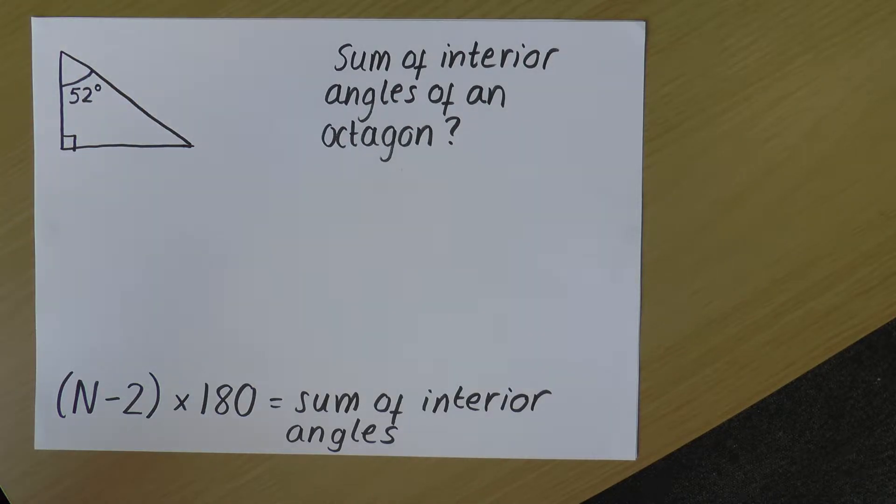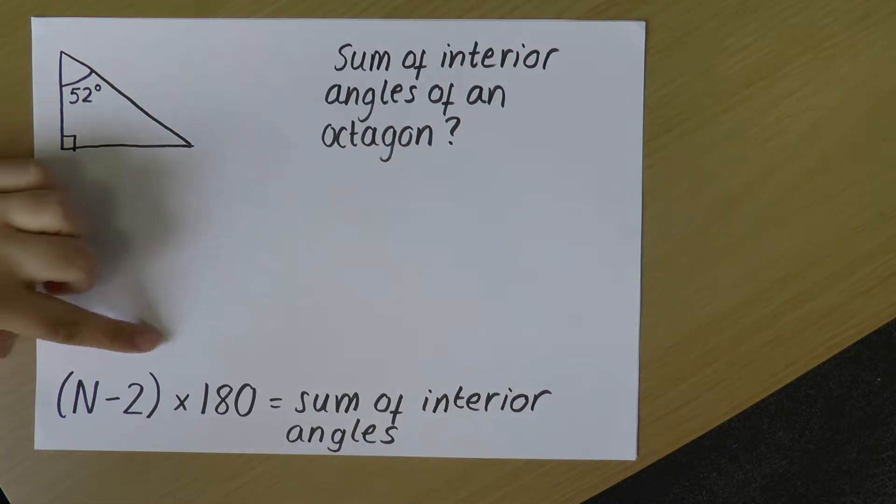Now, I can calculate the sum of interior angles using this equation down here. So (N-2) times 180, where N is the number of sides of the shape.